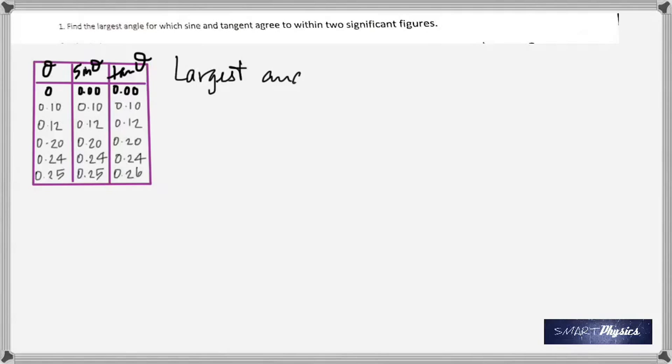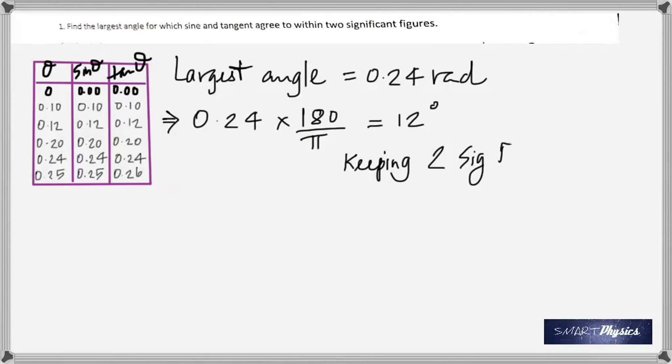So the question says, what's the largest angle? In this case, the largest angle is of course 0.24 radians, because the angle on the left hand side is in radians. So remember that all this time, these were in radians. And now to change radians into degrees, you multiply by 180 divide by π, because 180 degrees is π radians. So you multiply by 180, that's how you change radians into degrees, which gives you 12 degrees, and that's with two significant figures.